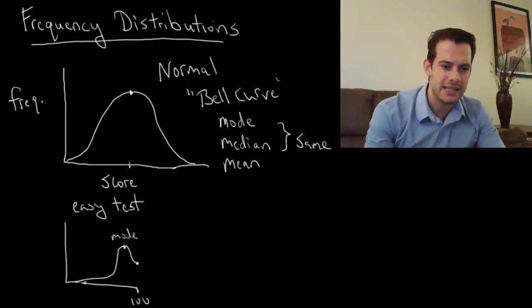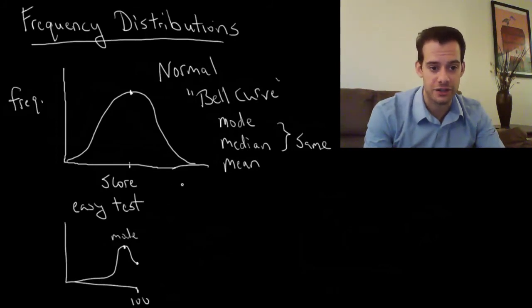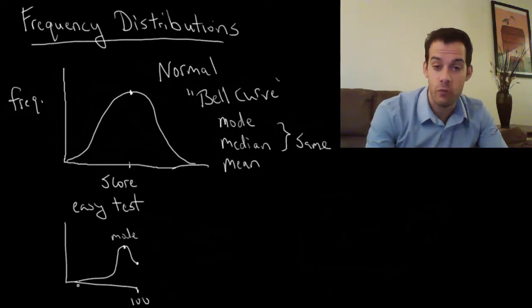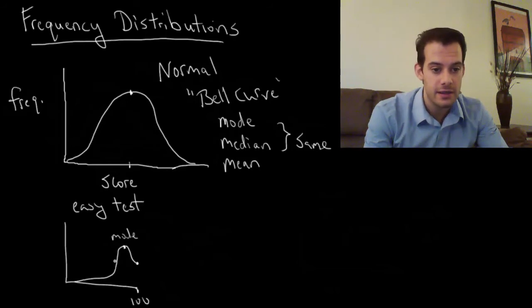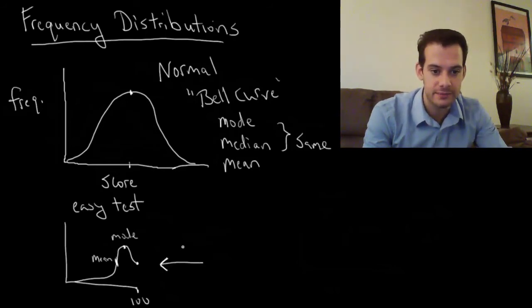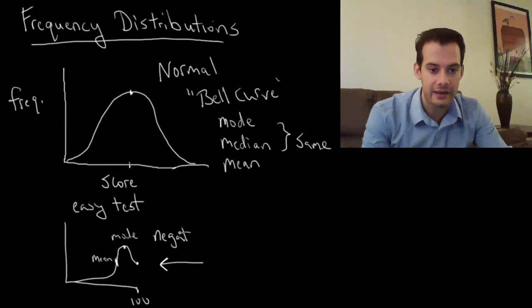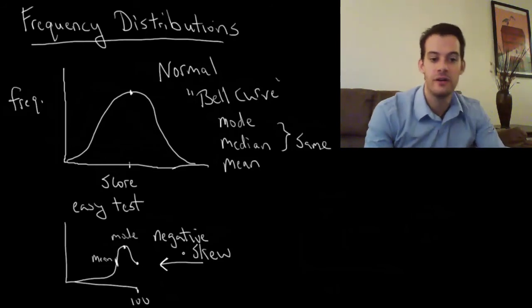But what's going to happen is these extreme low scores here are going to influence our mean. They're not going to influence our mode, but they're going to pull our mean in that direction. Because we said before the mean is sensitive to extreme scores. One student gets a 10 on this test and suddenly the average is going to drop by several points. So what happens is the mean ends up over here, somewhere to the left of the mode. It gets pulled in this negative direction. And so we call this negative skew. So the skew refers to which direction the mean is being pulled here. It's being pulled down, so this is negative skew.